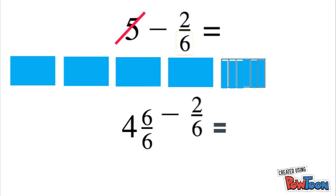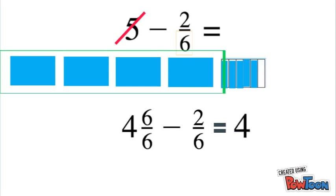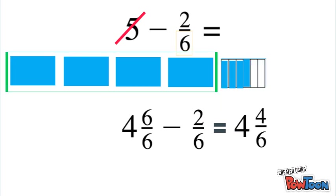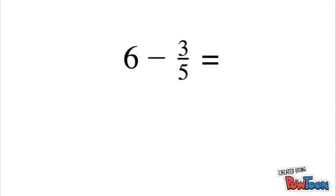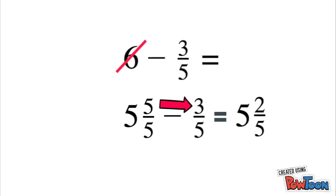Which leaves us with 4 and 4/6. So to sum it up, when subtracting a fraction from a whole number, you take one of your whole numbers and turn it into the equivalent whole fraction using the denominator. Then you can subtract your numerators. Thanks for watching, see you next time. Peace.